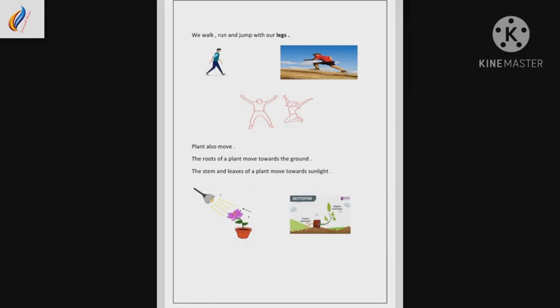The stem and leaves of plant move towards sunlight. Stem is sock, leaves are أوراق. They move towards sunlight. What do we call this process? We call it phototropism. Phototropism يعني الانتحاء الضوئي.